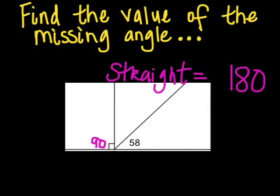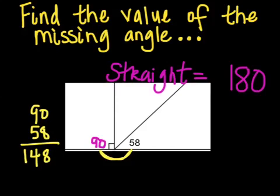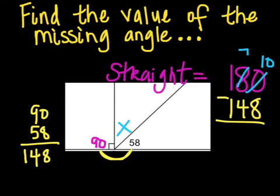So this one's going to be a little bit different. I'm going to have to add the two angles that I know, 90 plus 58. Together, those two angles are taking up 148 degrees, and the whole entire relationship needs to be straight or 180. So I'm going to subtract off the two I know to find the one missing part right here in the center. I'm going to borrow again, and I got 32. So this missing angle should be 32 degrees.